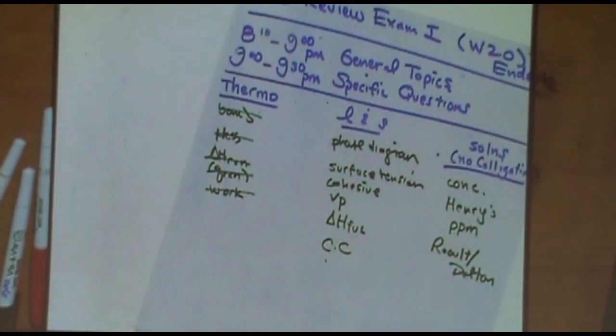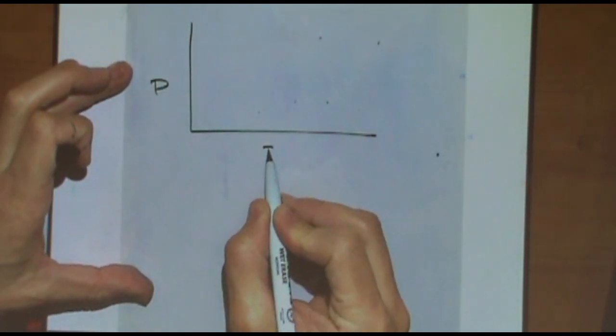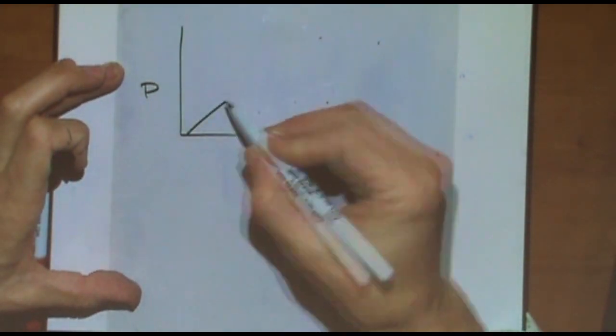Let's do liquids and solids here. Phase diagram. I would say the two common things are either to draw or interpret one. The interpretation could be just in words or it could be looking at a graph. So let's just make sure we got this straight as we make a little review.